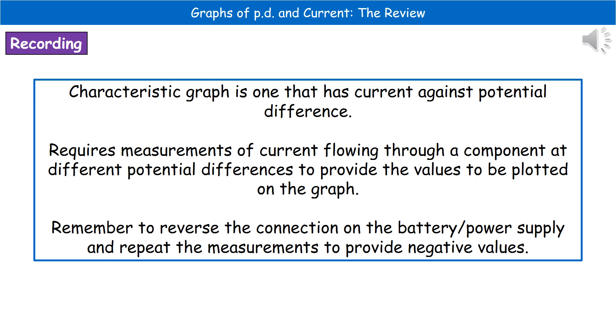Welcome to our review on graphs of potential difference and current. The first thing we need to know is what we're talking about when we refer to something called a characteristic graph. A characteristic graph is one that has current plotted against potential difference.